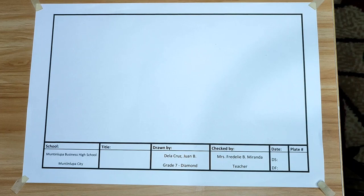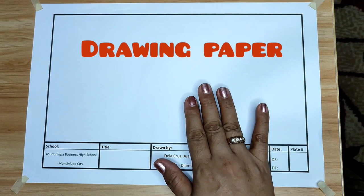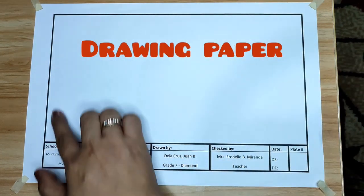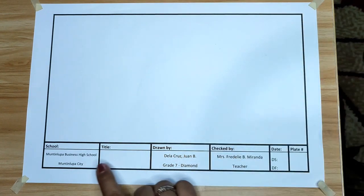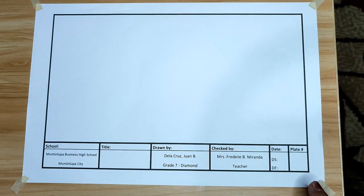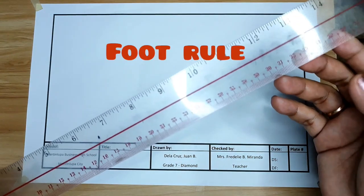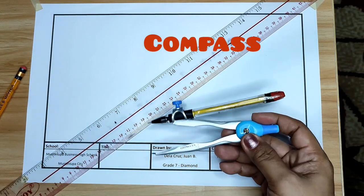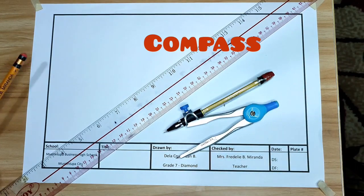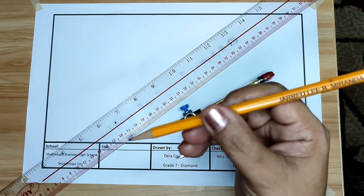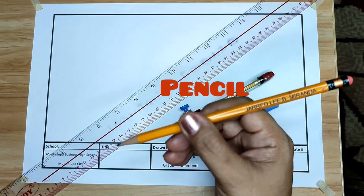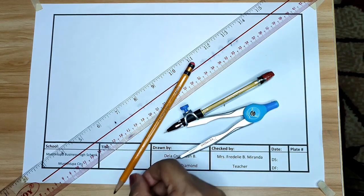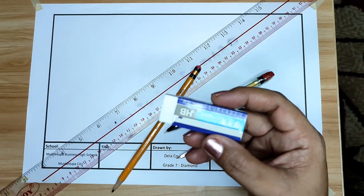Drawing materials needed are drawing paper with borderline and title block, foot rule, drawing compass, pencil, and of course, eraser.